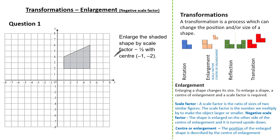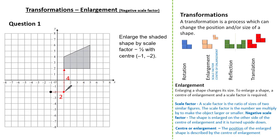The question wants us to enlarge the shaded shape by a scale factor of minus one half, with the centre at minus one, minus two. First let's identify our centre of enlargement at minus one, minus two. Then let's identify the distance of each vertex from our centre of enlargement. From the centre of enlargement, this first vertex is two to the right and four up.